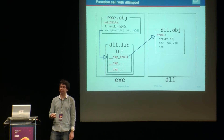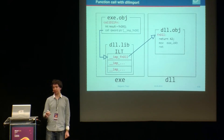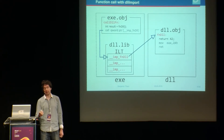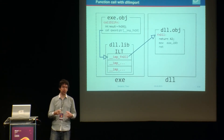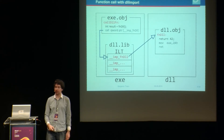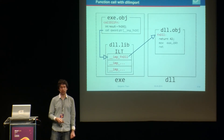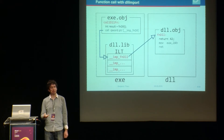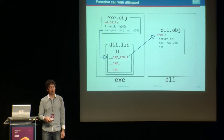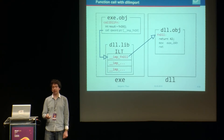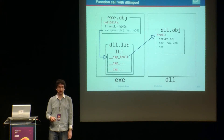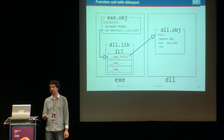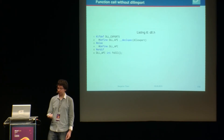The problem is that the assembly for calling a DLL function is different from calling a regular function. Normally you just `call function` and you're done, but here it has to dereference the import symbol first. So the code generation is different when calling a function inside a DLL versus one in the same executable. And that's a problem for D because without `import` we don't know whether the function resides in the same executable or in a DLL.